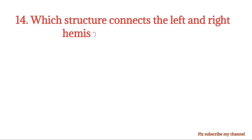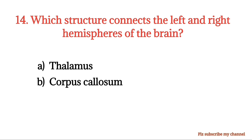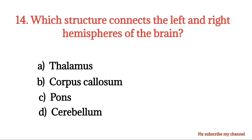MCQ number 14. Which structure connects the left and right hemispheres of the brain? Option A: Thalamus. Option B: Corpus callosum. Option C: Pons. Option D: Cerebellum. The right option is Option B.